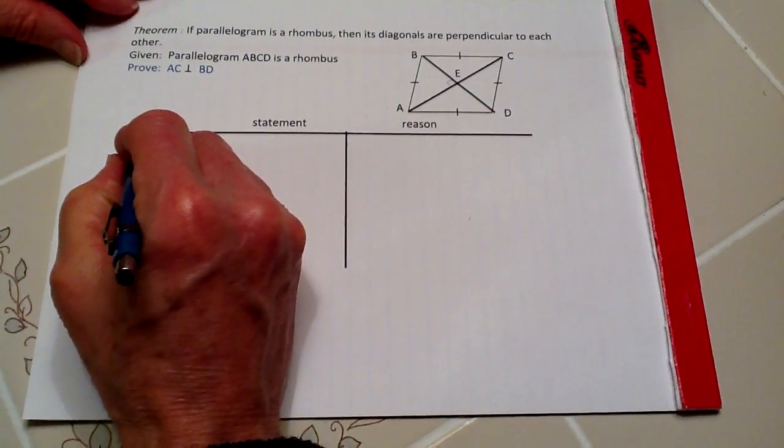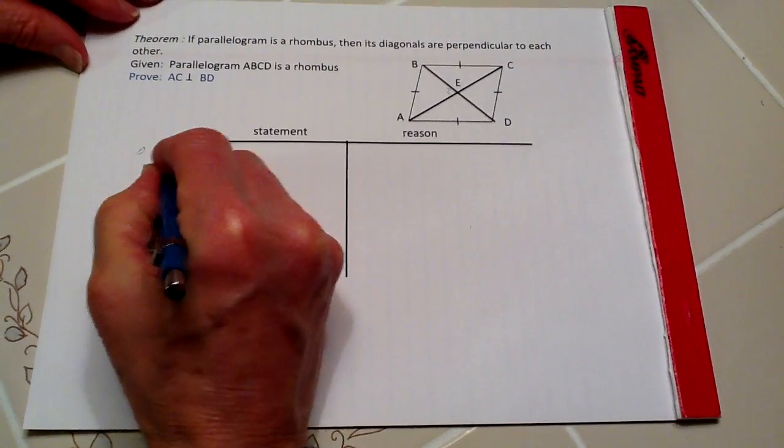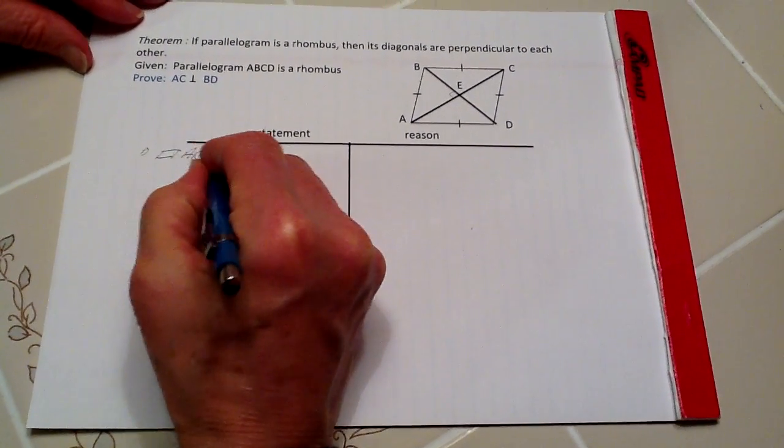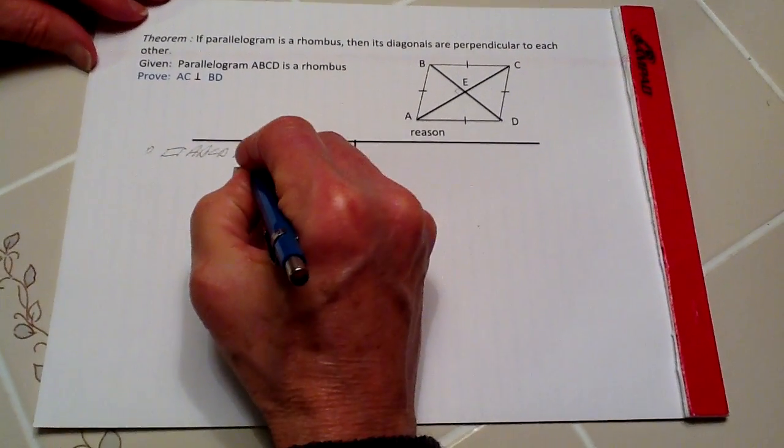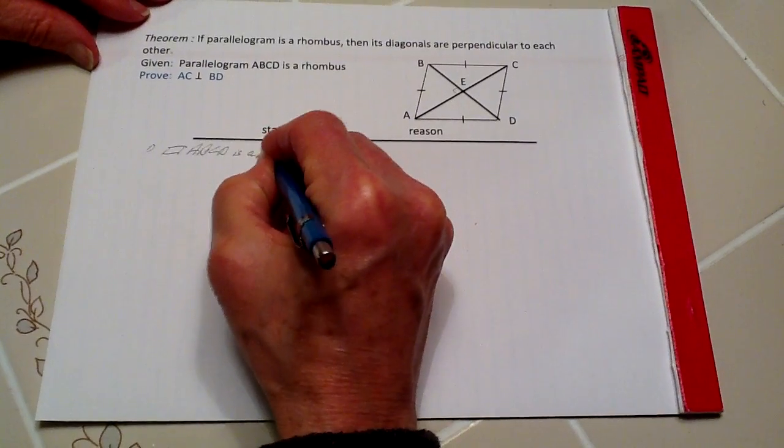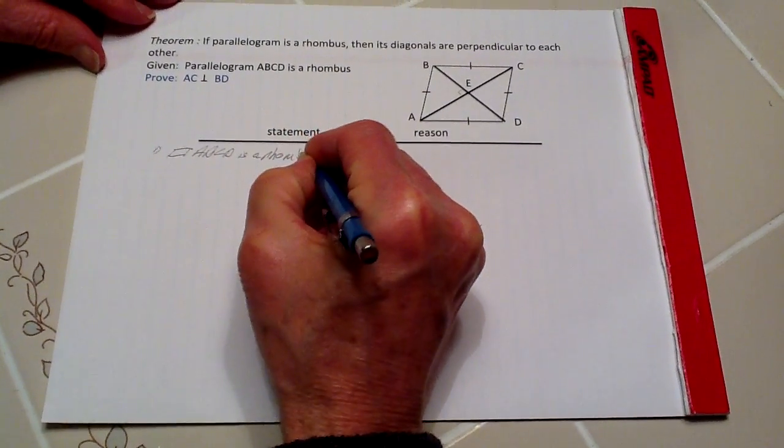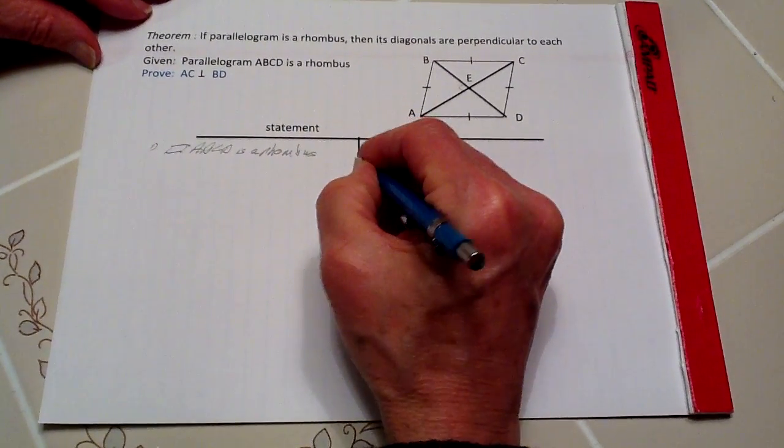First, number one, we have the parallelogram ABCD is a rhombus. That's given.